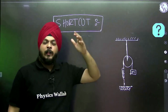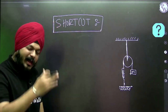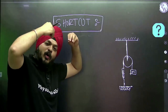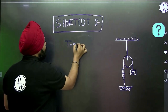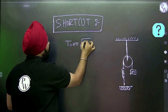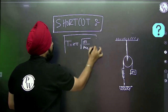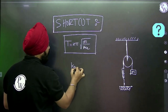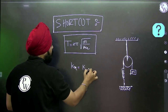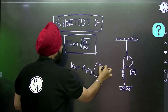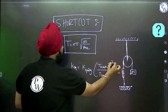For these kinds of systems, the displacement method and other approaches exist, but I am going to provide a direct shortcut that is applicable everywhere. The shortcut states: the formula for the time period is T equals 2π under root of M by K equivalent, where K equivalent equals K of spring multiplied by (tension on block divided by tension on spring), whole squared.